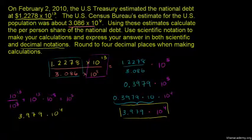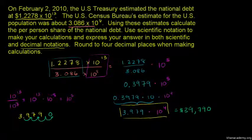3.979 times 10 to the 4th is the same as 3.979 with the decimal moved 4 places, giving us 39,790 dollars. The per capita national debt is $39,790.